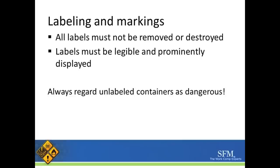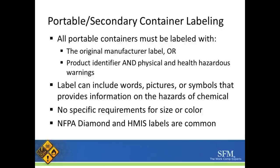One important reminder: all labels must not be removed or destroyed from the manufacturer. They must be legible and prominently displayed. Always regard unlabeled containers as dangerous. Many times chemicals are moved into portable or secondary containers, and those must also be labeled — either with the original manufacturer label or with the product identifier and physical and health hazard warnings. The label can include words, pictures, or symbols that provide information on the hazards of that chemical.